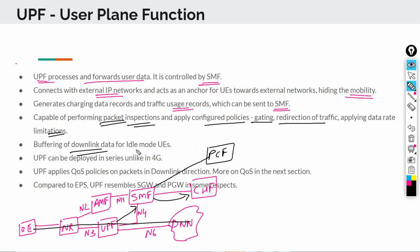For idle mode subscribers, downlink data that comes into the network gets buffered at the user plane function. The UPF notifies the SMF that there is incoming data for a subscriber. The SMF in turn notifies the AMF, the AMF pages the relevant radio access network, and the radio access network pages the subscriber. A tunnel is then established between the UE, NR, and UPF, and the buffered data gets delivered to the user.